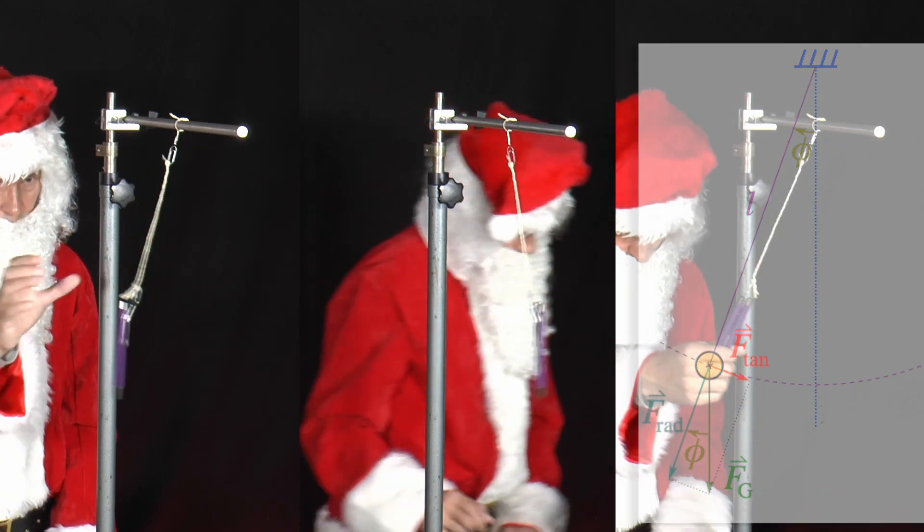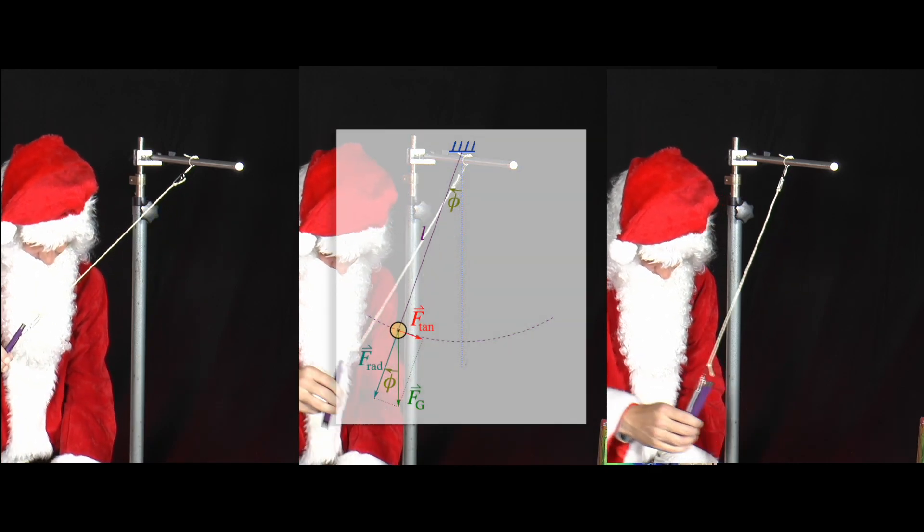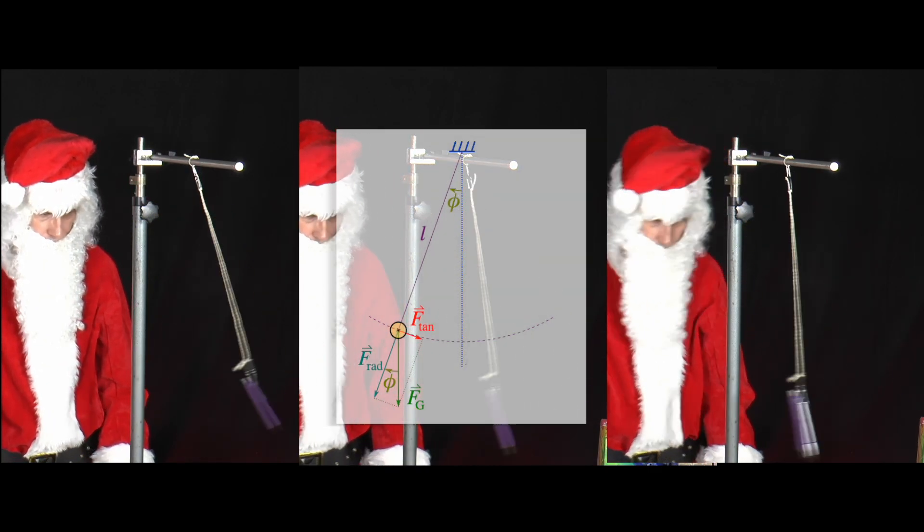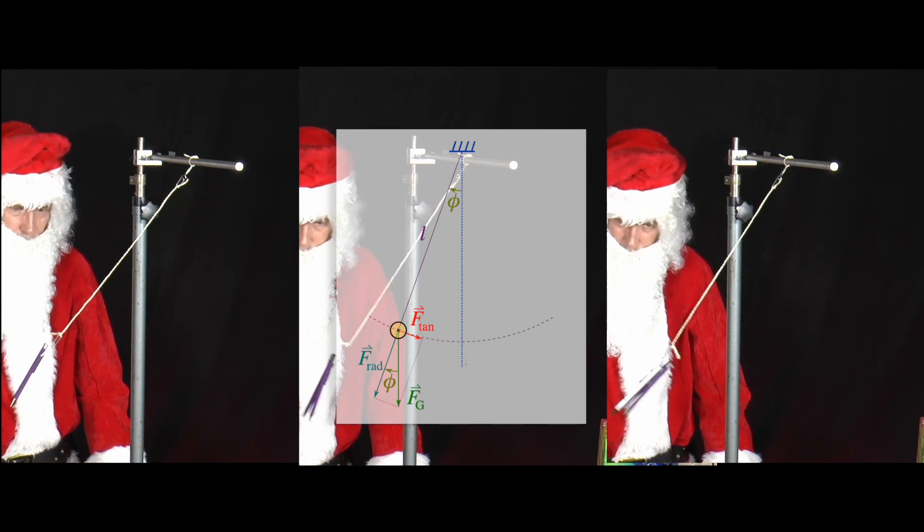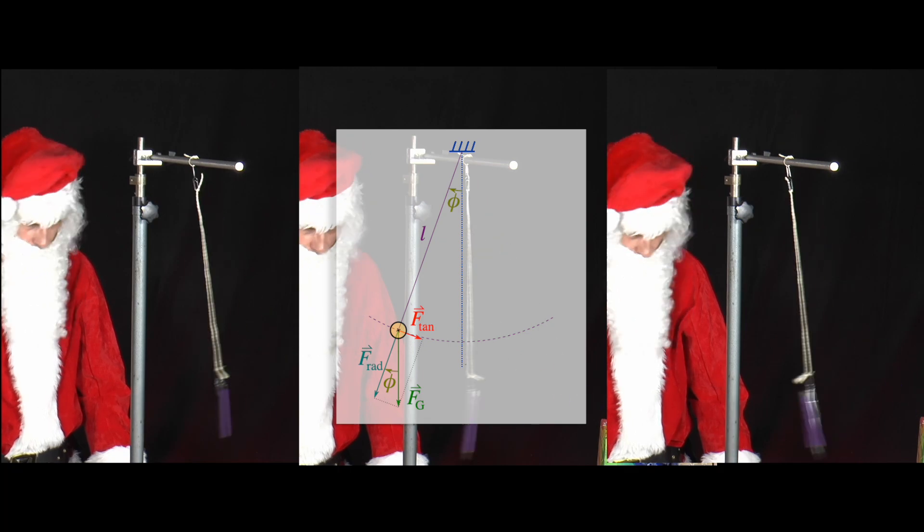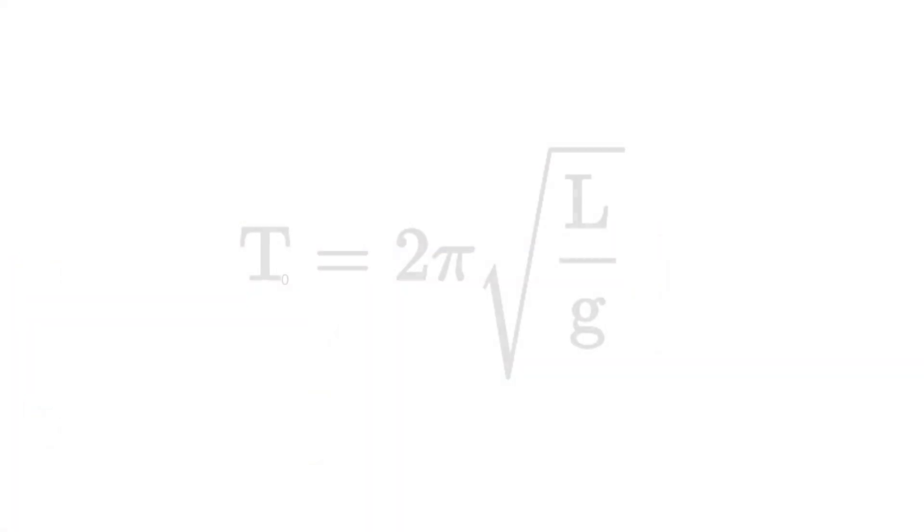The force causes the pendulum mass to accelerate. The latter, in turn, depends on the mass and the force. The acceleration along the circular path can be converted into an accelerated change in angle and the pendulum length, L, pronounced L.